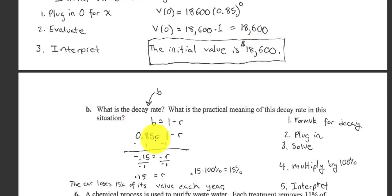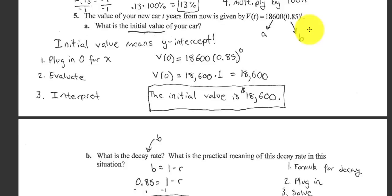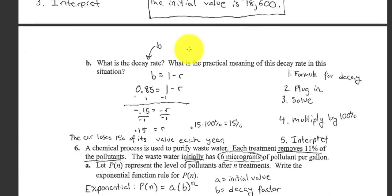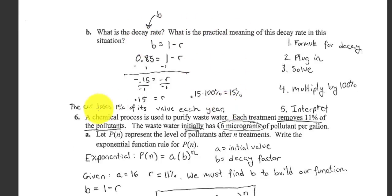Part B, what's the decay rate? Well, if we know the B is 0.85, we can sub in 0.85 and solve for R. We end up with 15%. So the car will lose 15% of its value each year. The decay rate is 15%. The practical meaning is the car will lose 15% of its value each year.